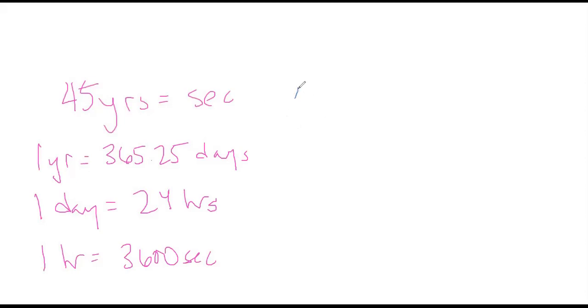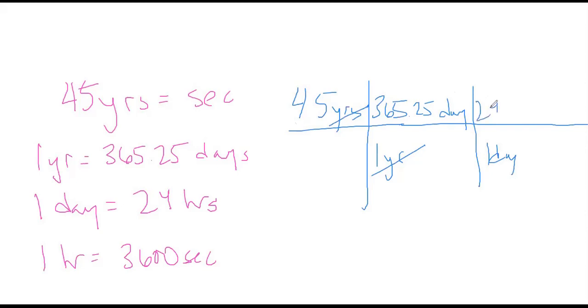We start with 45, that's where we want to start, 45 years. Then we just cancel out units. One year, 365.25 days, years cancel. One day, 24 hours, days cancel.